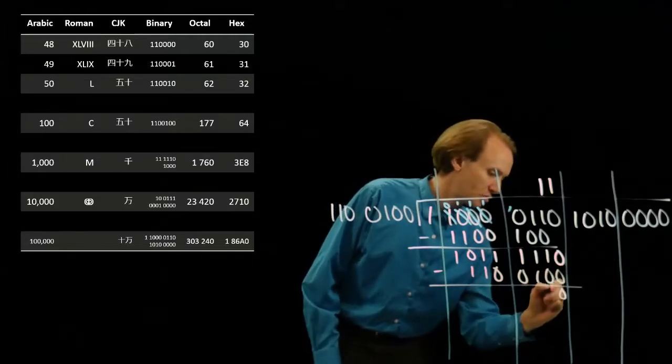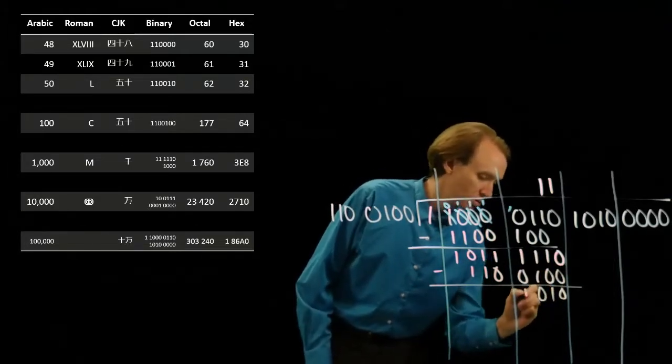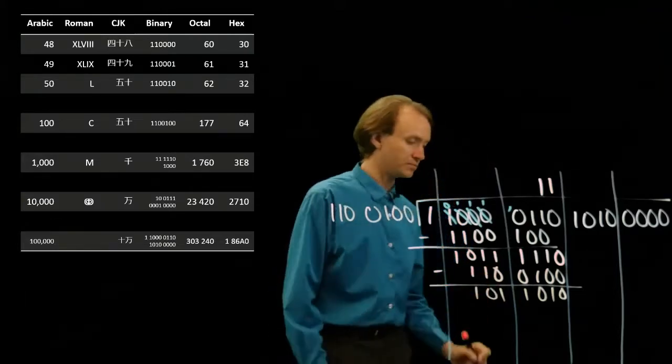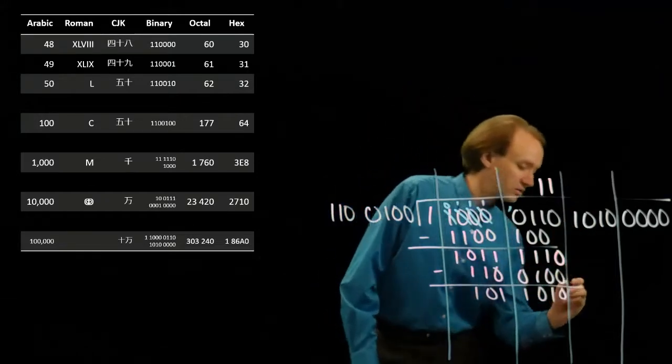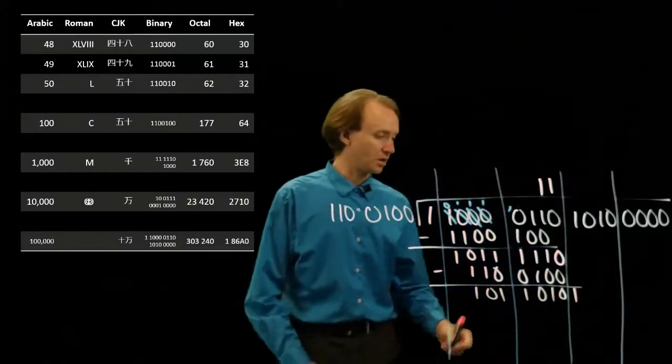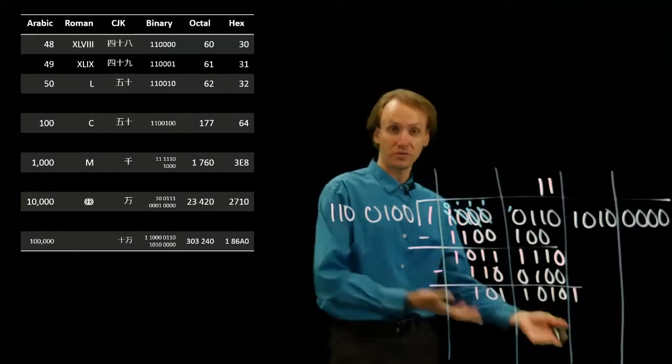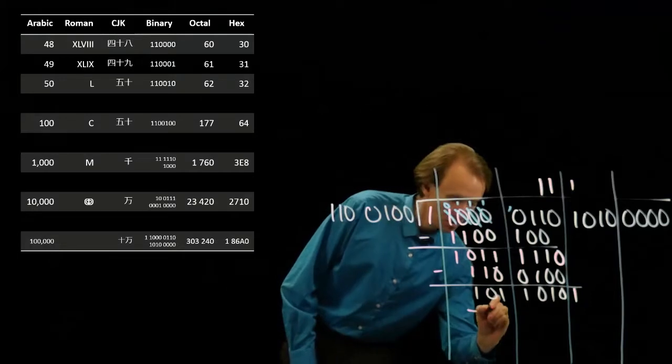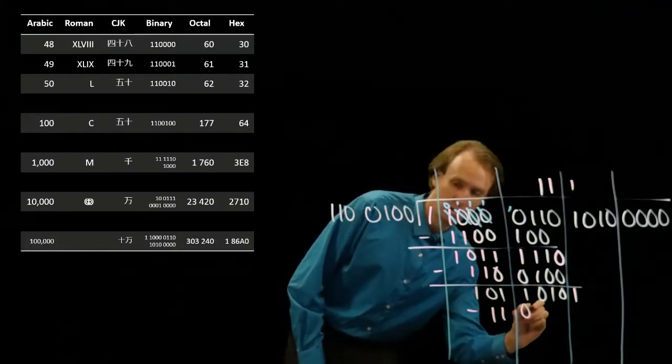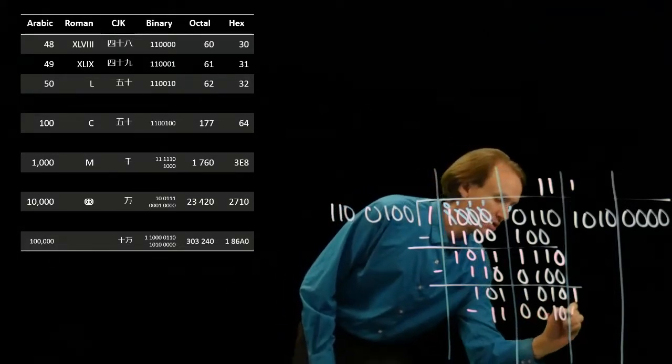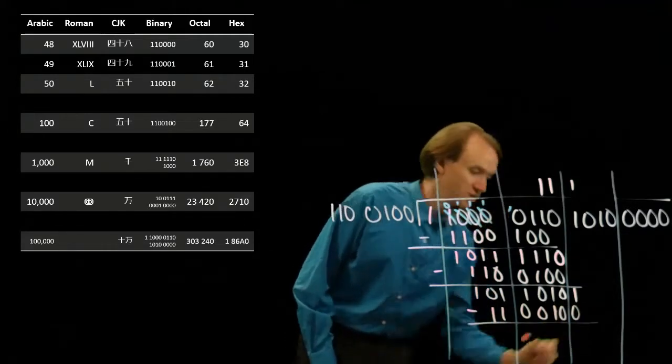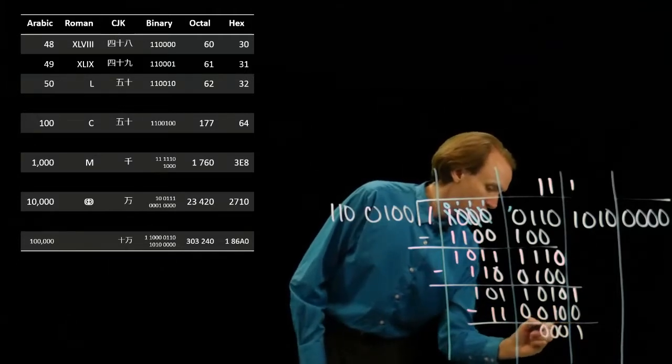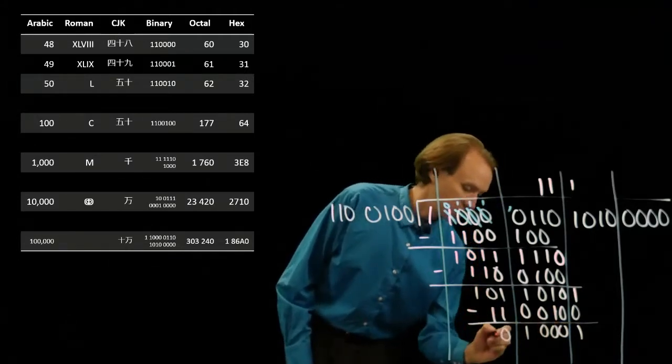0 minus 0 is 0, 1, 0, 1, 1, 0, and 10 minus 1 is 1. Pull down another 1. Now I've got an 8-bit number again, so my 7-bit number will obviously go into it. So I'll put down a 1, and subtract my 7-bit number. And 10 minus 1 is 1.